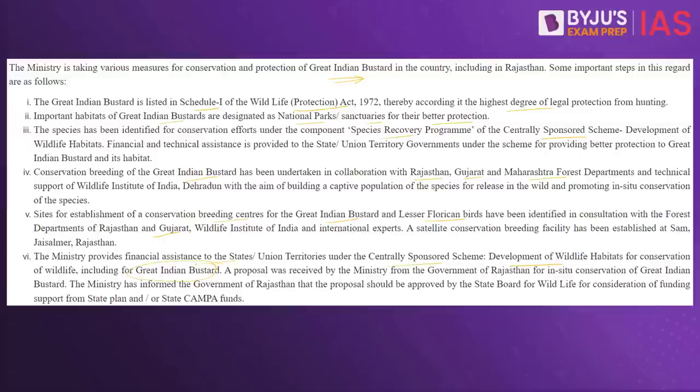The government has taken many steps to conserve this species. In 2015, the central government launched the GIB species recovery program. Under this, the WII and the Rajasthan Forest Department jointly set up conservation breeding centers where Great Indian Bustard eggs were harvested from the wild, incubated artificially, and hatchlings were raised in a controlled environment.